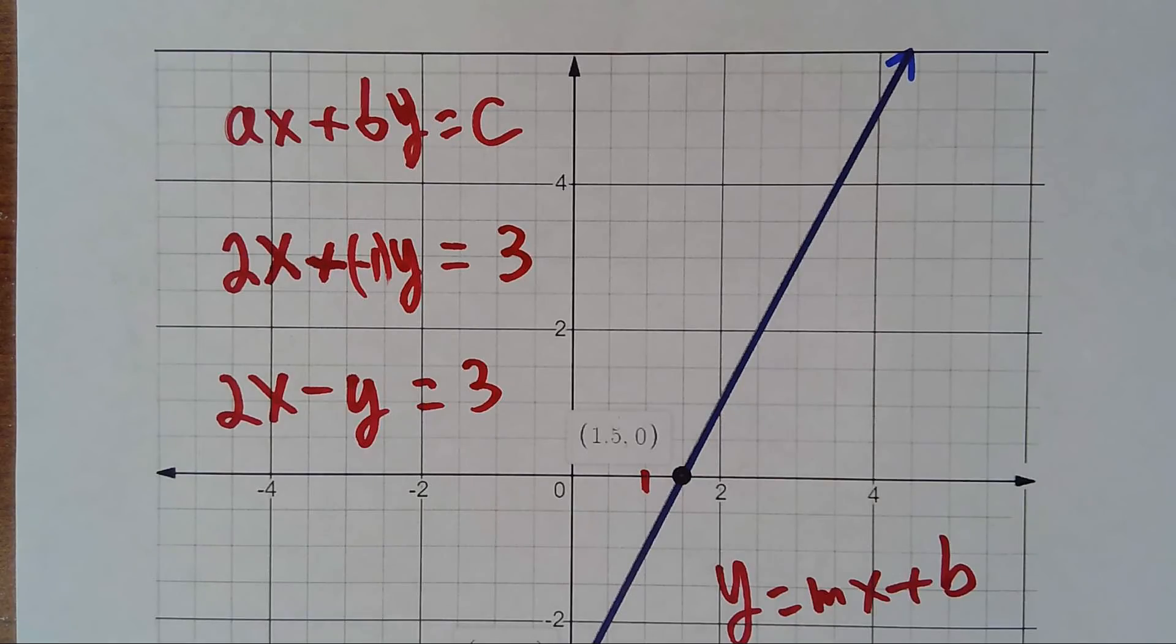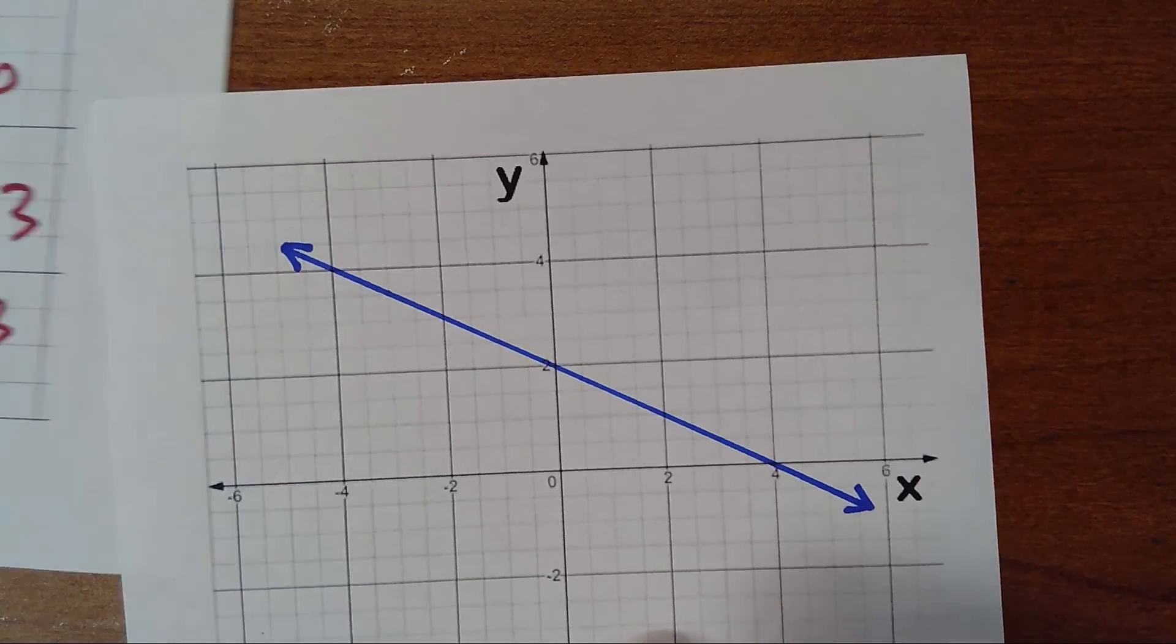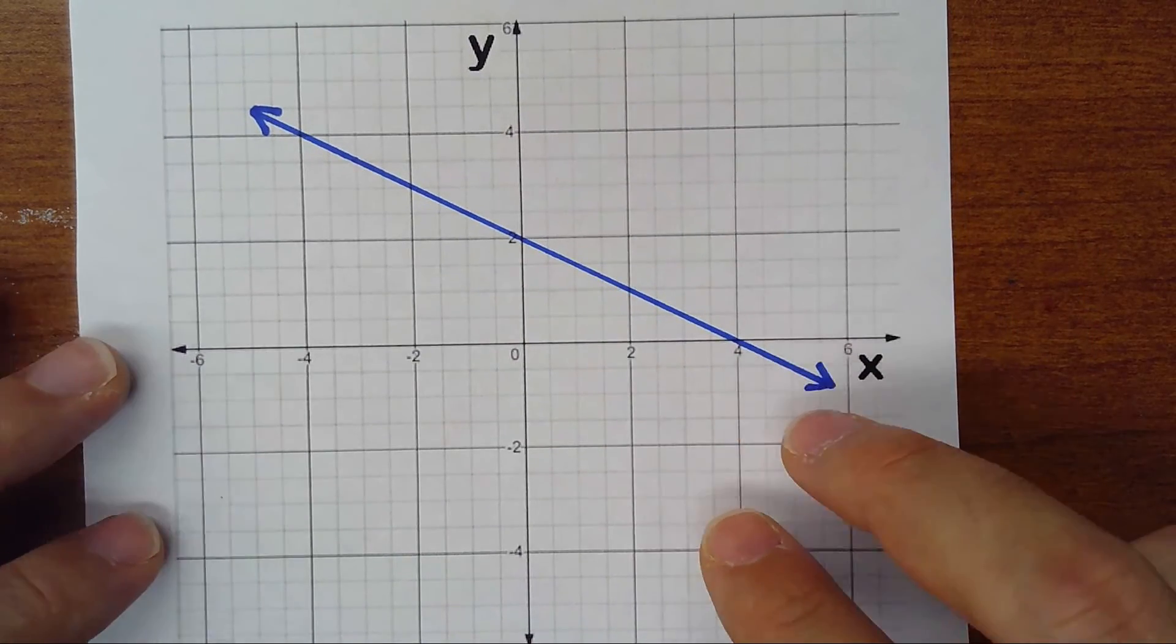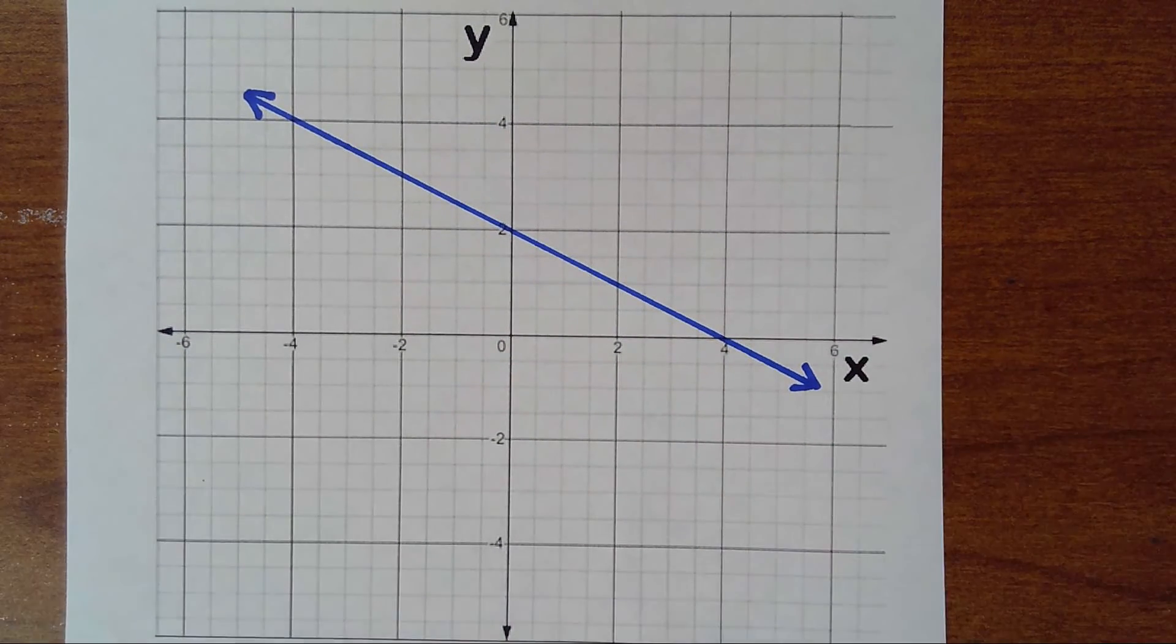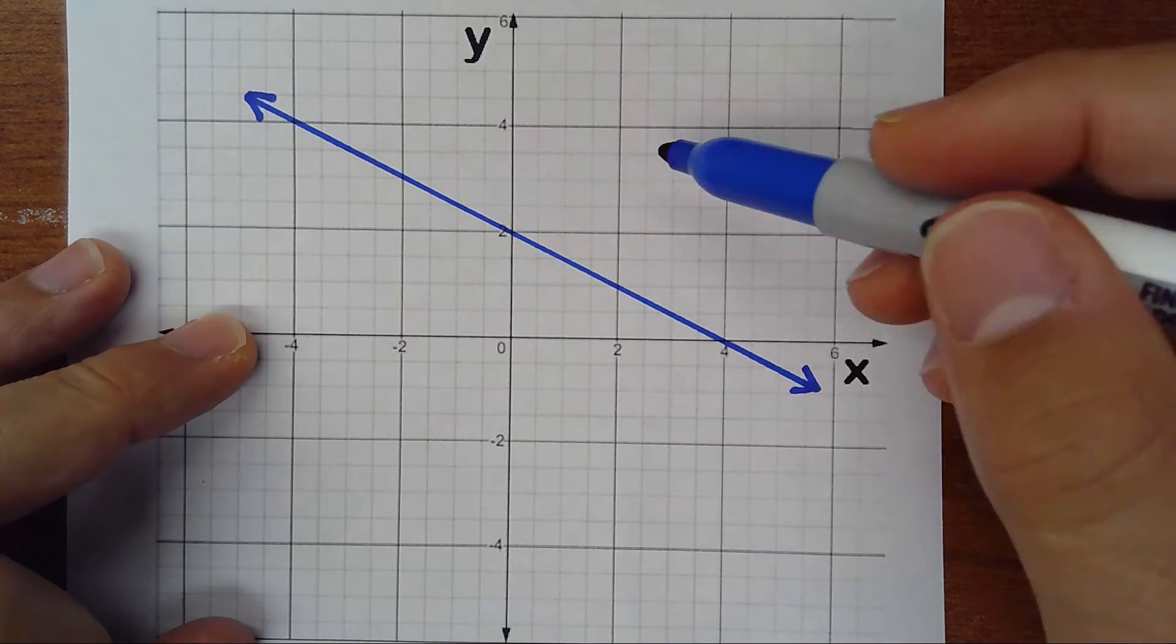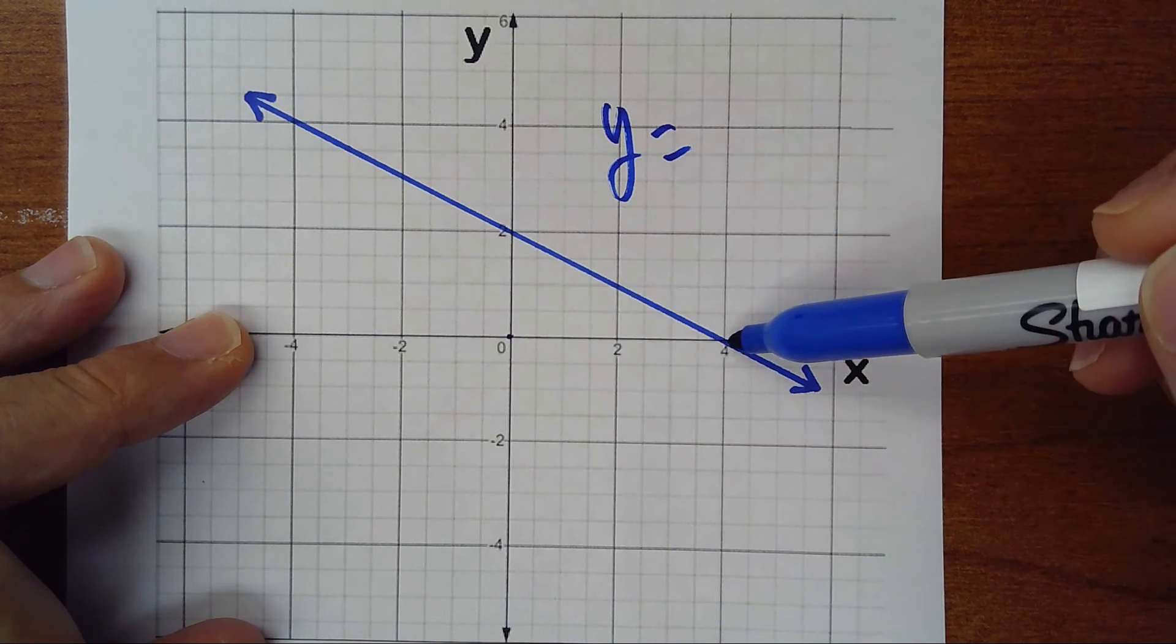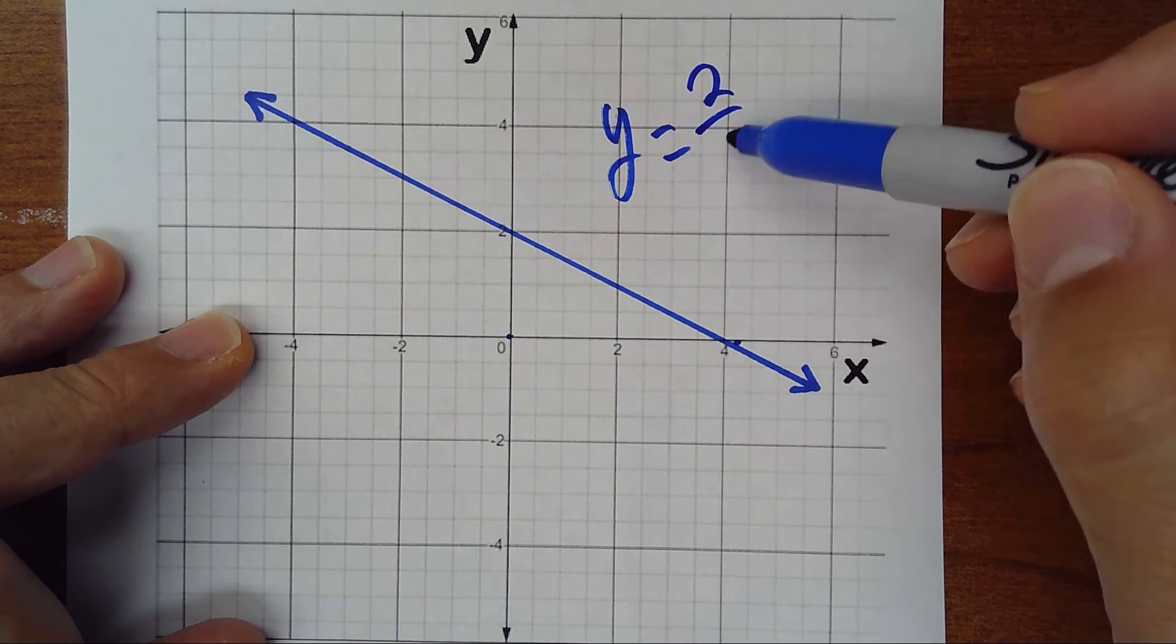We did it first in slope-intercept form. Let's do another one. I have the graph here. The y-intercept is 2, and the slope is 2 down 4 right.